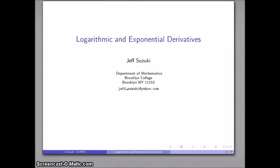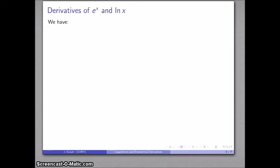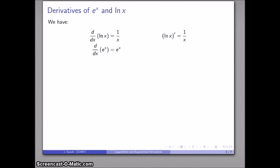Let's look at the derivatives of logarithmic and exponential functions. Our two key functions are e to the x and log of x, and our derivatives are the following. The derivative of log is 1 over x, and for e to the x — this is the world's simplest derivative — the derivative of e to the x is e to the x.